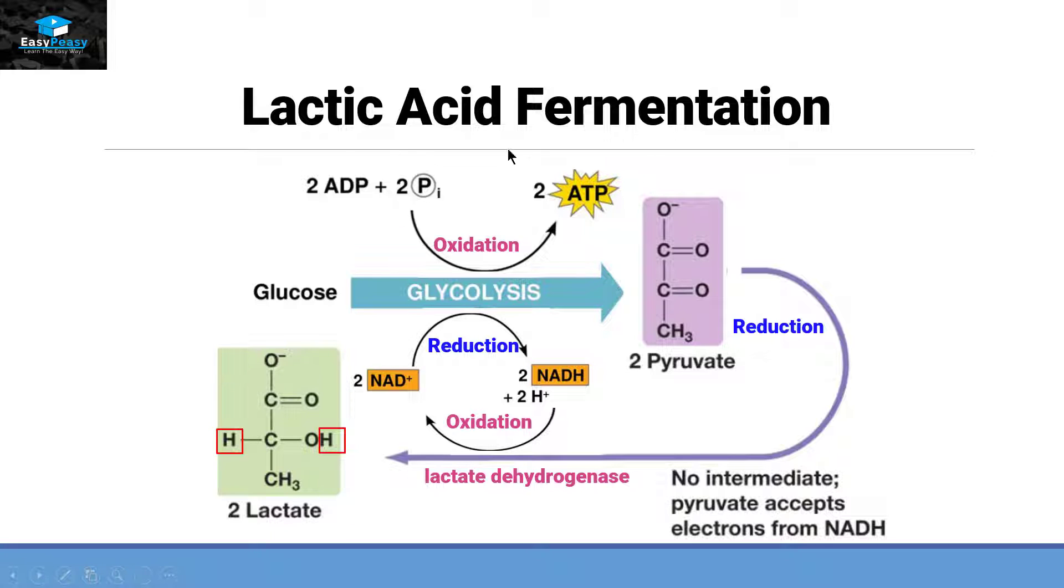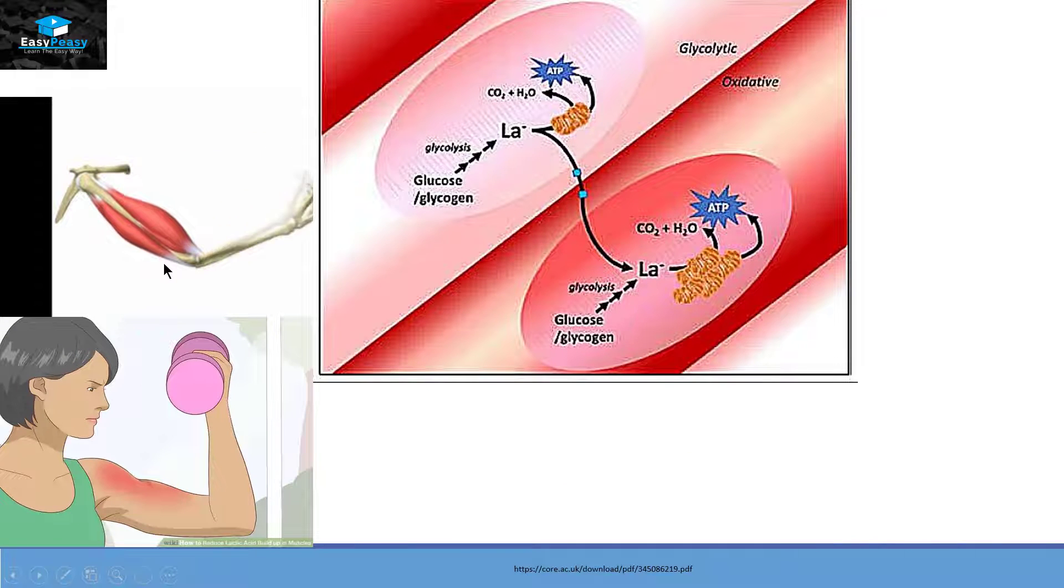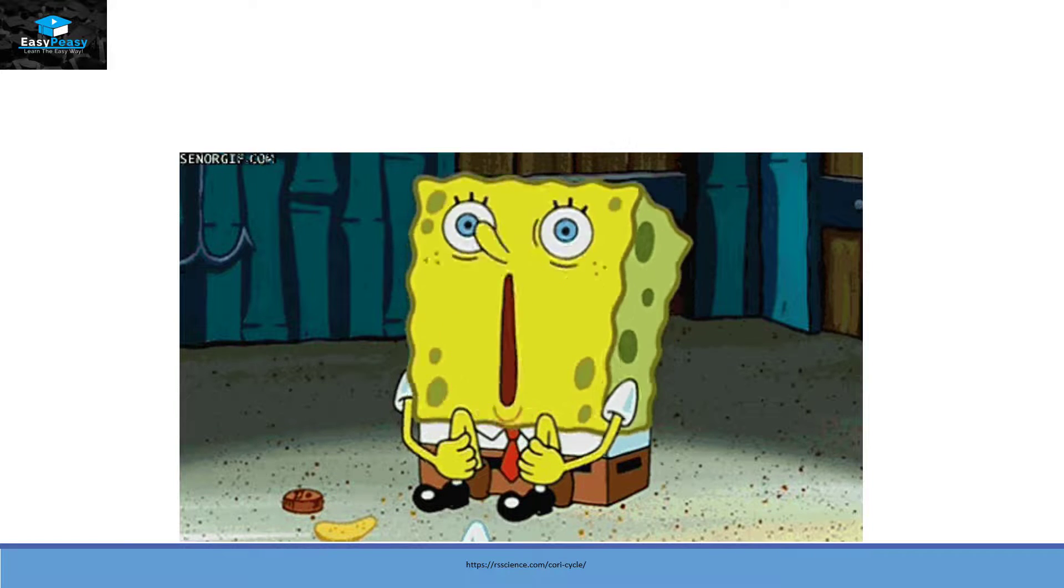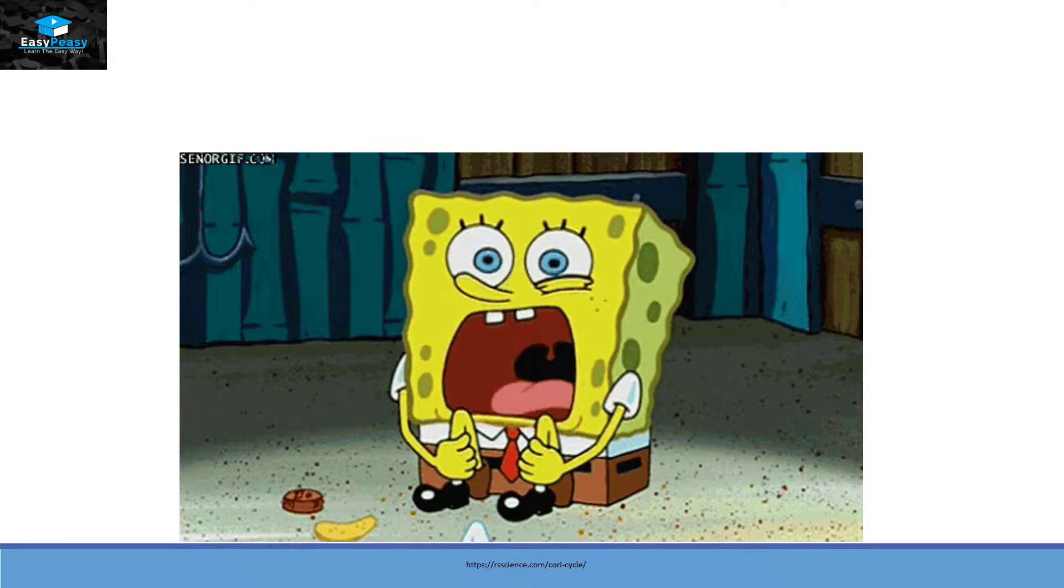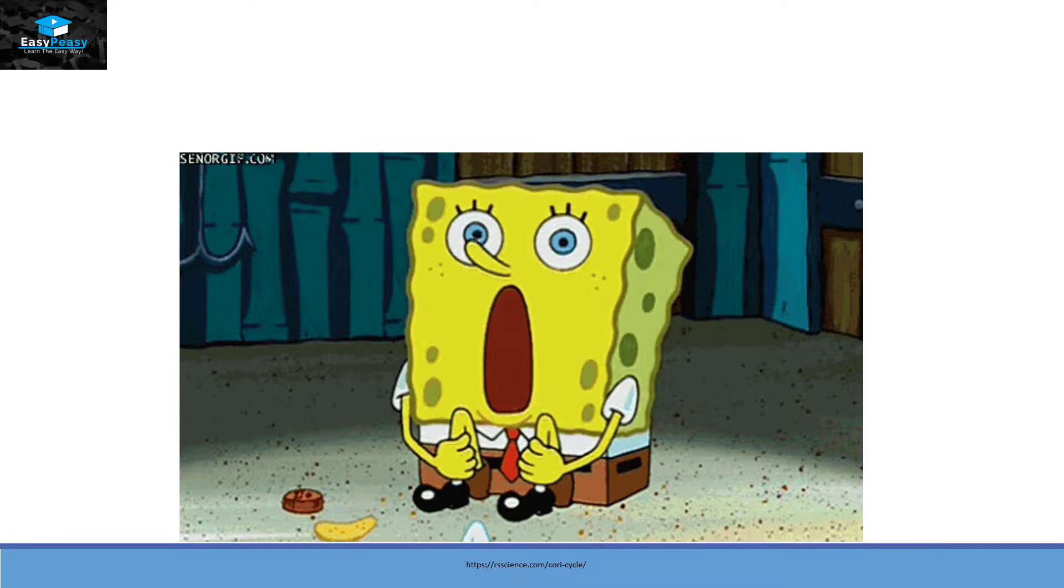So in order to produce these two ATP molecules again and again by the process of glycolysis, the conversion of pyruvate into lactate is necessary. Now when we are constantly exerting ourselves, this lactate will start depositing in our muscles, and after some time we will feel soreness and tiredness in that muscle.